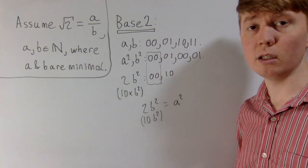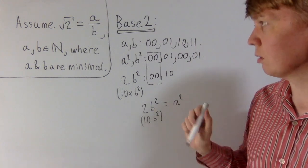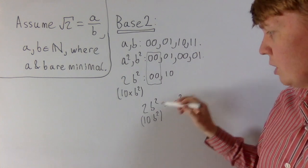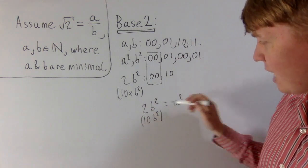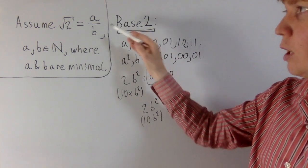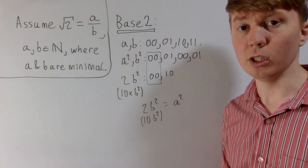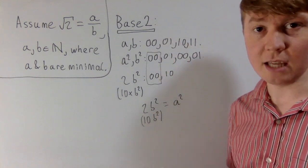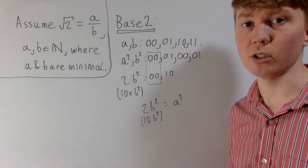If a number ends in 00 when written in base 2, it's a multiple of 4. So 2b² is a multiple of 4, and a² is a multiple of 4. This implies that a and b both have to be multiples of 2, meaning we can simplify our fraction further — contradicting our assumption that a and b are minimal. This is basically just a different take on the classic proof where you show that a and b both have to be even.